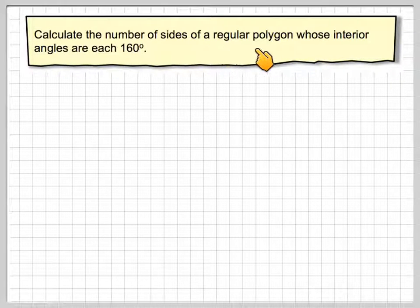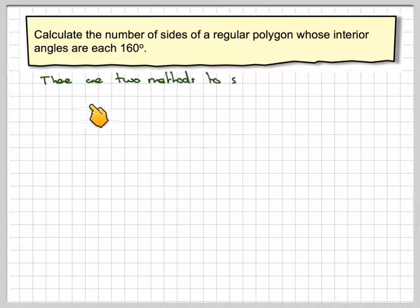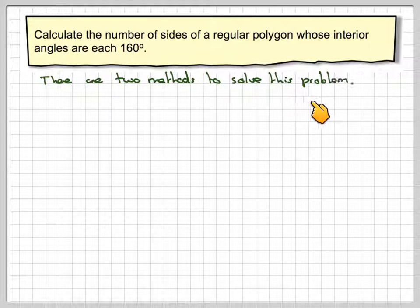Calculate the number of sides of a regular polygon whose interior angles are each 160 degrees. There are two methods to solve this problem.